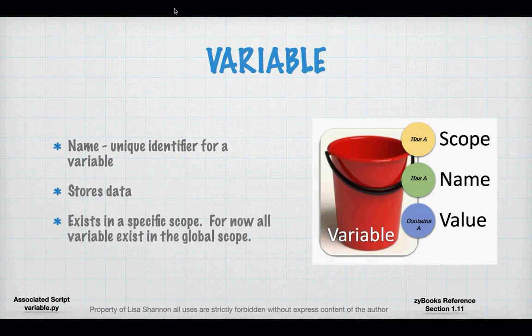A variable is a container. It stores information, it stores data. And a variable has three properties. It has a name — you can call it Fred, you can call it X. It's going to store something, so when you create a variable you are actually carving out a place in memory and you're going to put a piece of information in that memory. And then every time you want to get that piece of information, you can use the name of the variable to get it. And a variable exists in a specific scope. For right now we only have to worry about the global scope.